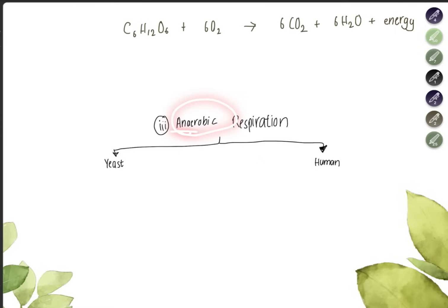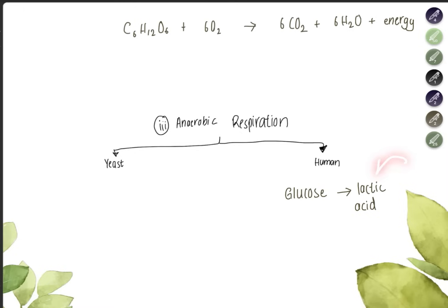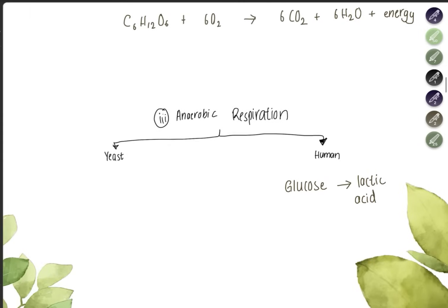Anaerobic respiration occurs without oxygen. In humans, when we are running and there is not enough oxygen to break down glucose, our cells start breaking down glucose without oxygen. The word equation is: glucose → lactic acid. Later, when there is enough oxygen — for example when you stop running and breathe heavily to recover the oxygen debt — this lactic acid is broken down again into carbon dioxide and water.